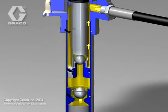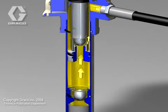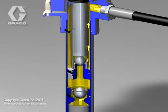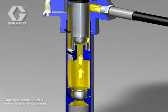On the downstroke, fluid is trapped in the cylinder between the piston rod and lower ball check. The lower ball check closes and the upper ball check opens.